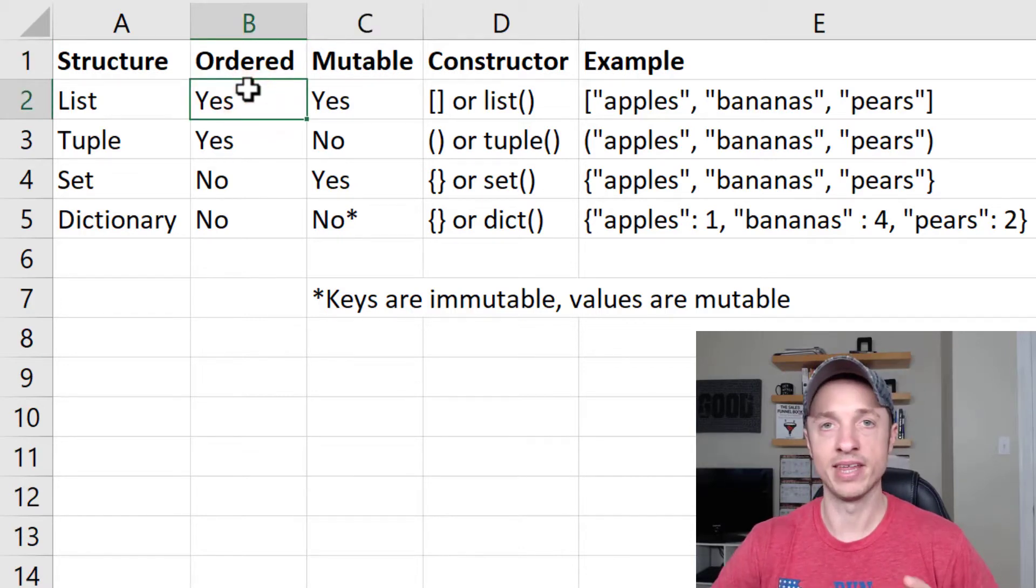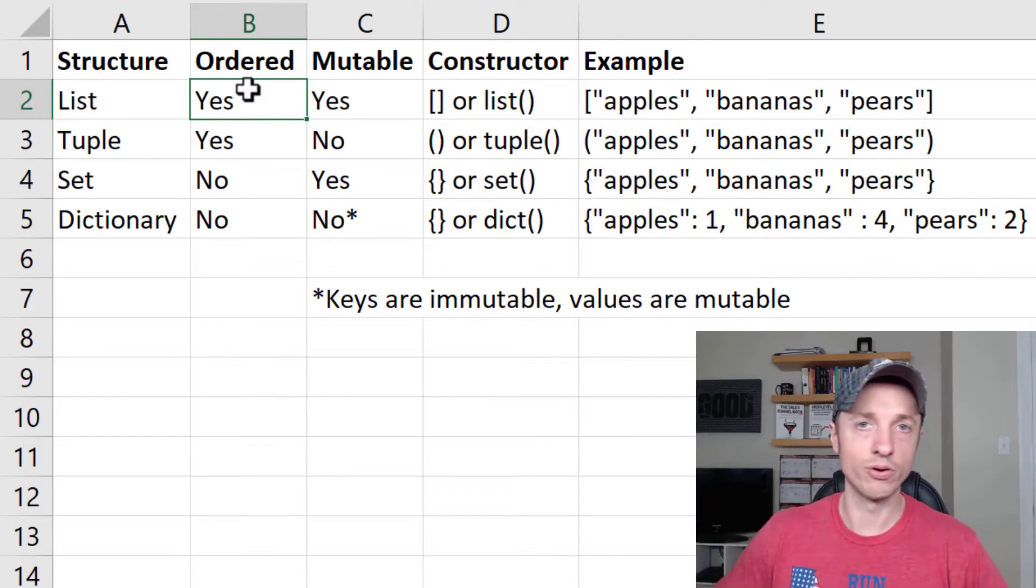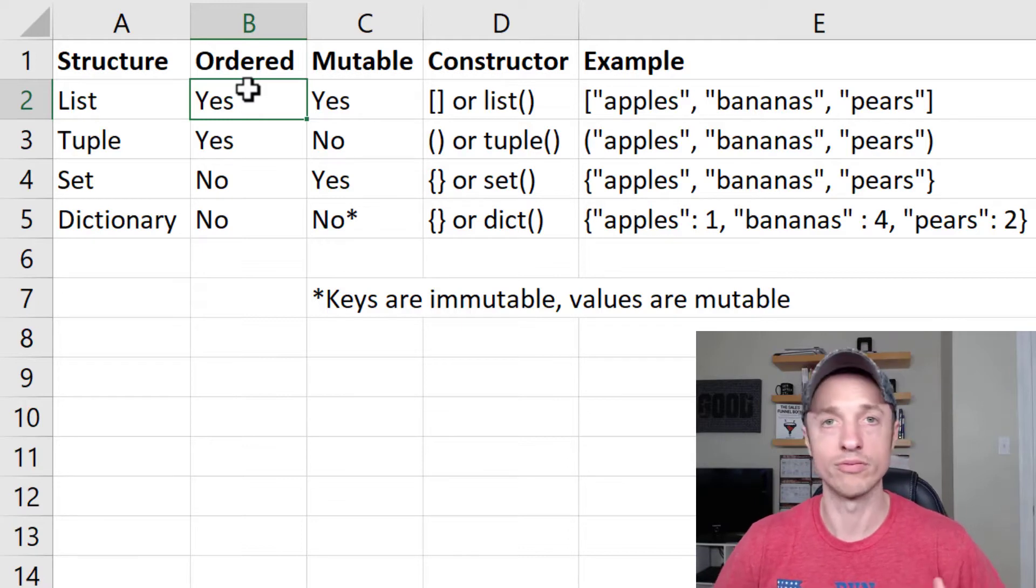So order means if they are in an order: one, two, three, four, five, six, seven, whatever. That's like an order. They stay in that order, and they don't change order randomly.